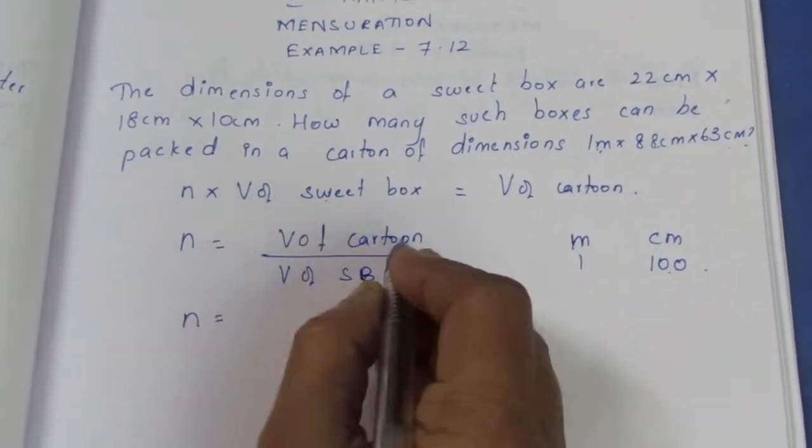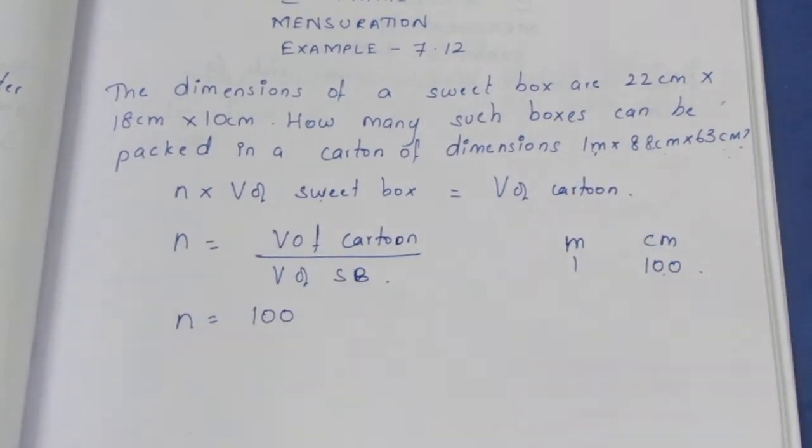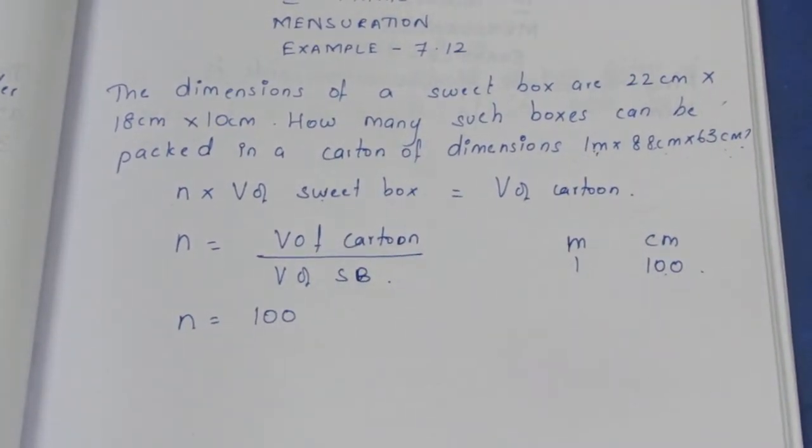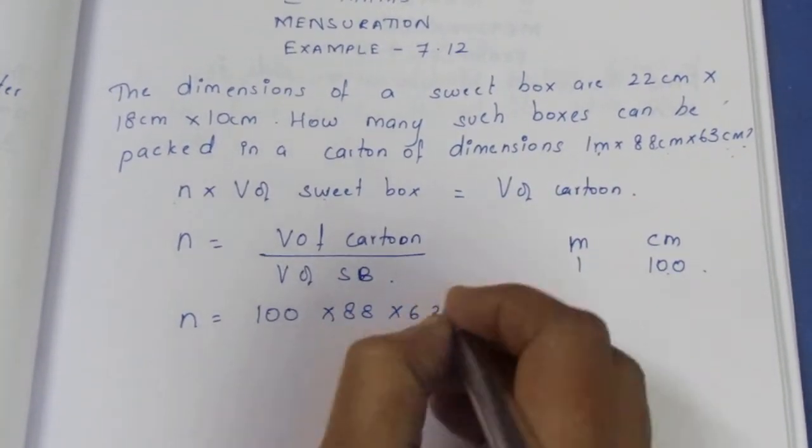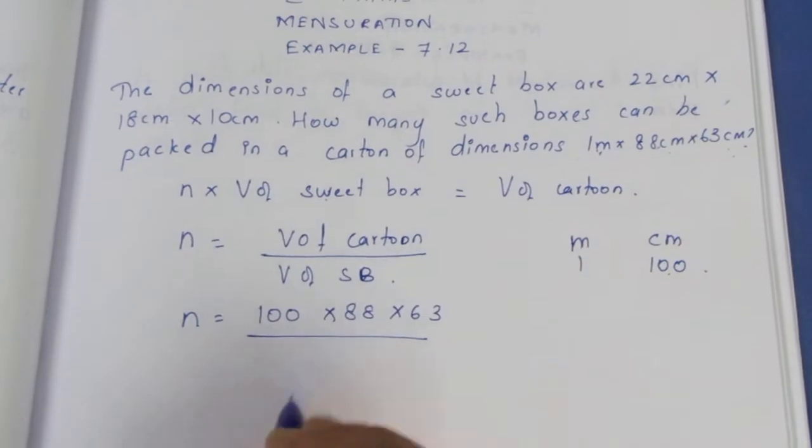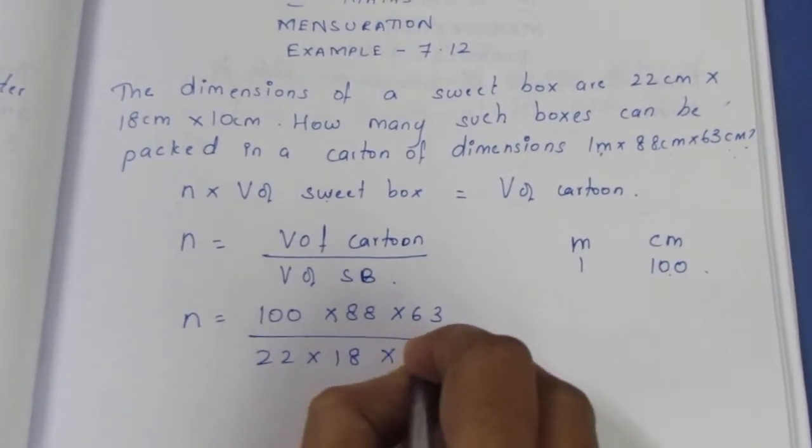So n equals volume of carton divided by volume of sweet box. This is 100 × 88 × 63 divided by 22 × 18 × 10.